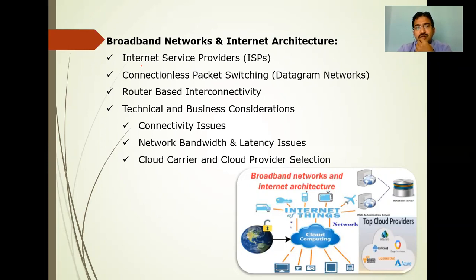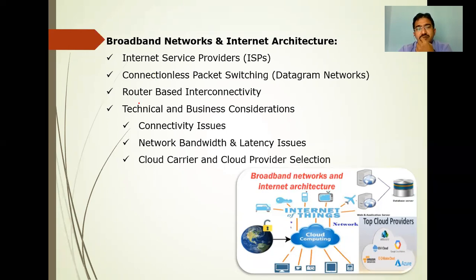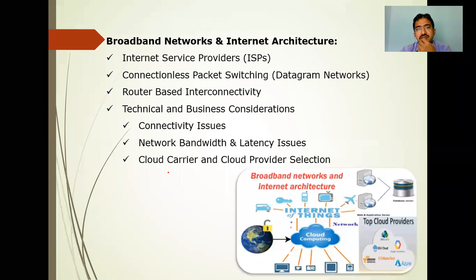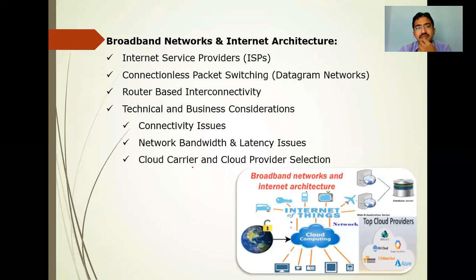Third, route-based internet connectivity — how we are going to access internet facilities with the help of routers. Fourth, some technical and business considerations, including connectivity issues, bandwidth and latency issues, and carrier and cloud provider selection issues — the service consumer and provider selection issues — we are also going to be looking into these.